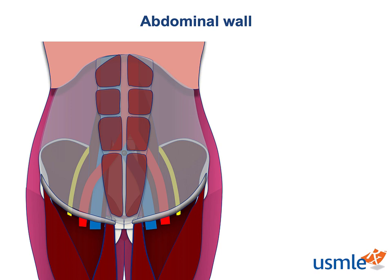In the proximal portion of the thigh, between the sartorius, adductor longus, and the inguinal ligament, this major neurovascular bundle runs extremely superficially, basically only covered by skin and fat. Because of that, it's an important access point — not only for surgeons, but also for cardiologists and interventional radiologists who use the femoral artery as an access point to the arterial circulation. It's also used by emergency and critical care physicians who use the femoral vein as central access, and by anesthesiologists who can perform regional nerve blocks to the femoral nerve. Because of its importance, this anatomic region is given its own name: the femoral triangle.